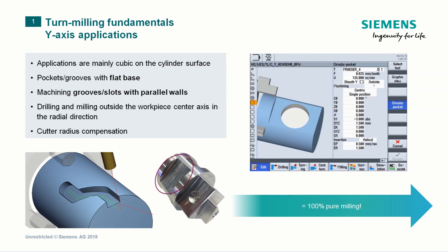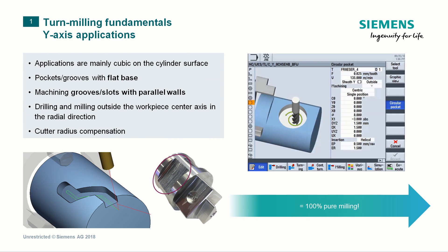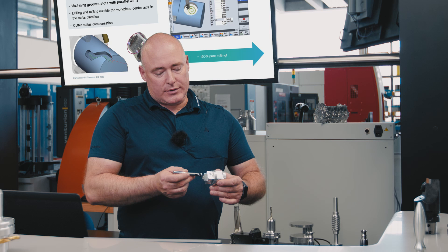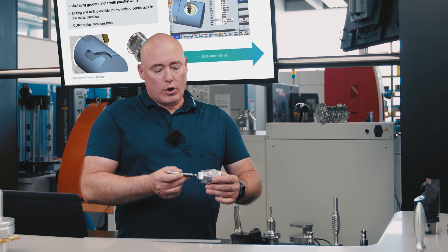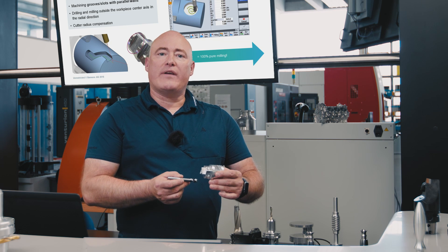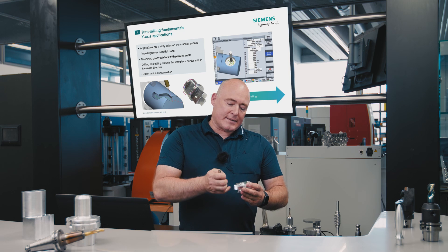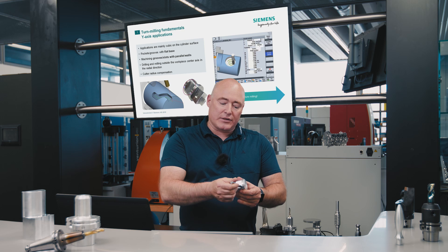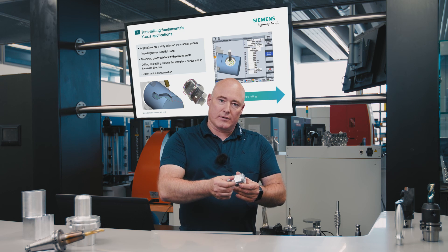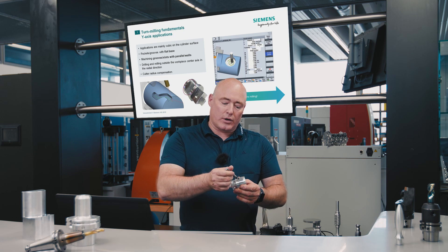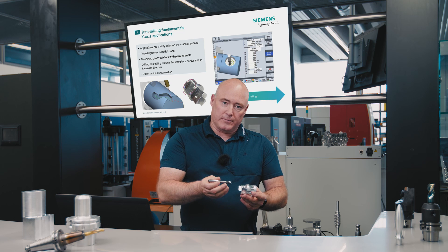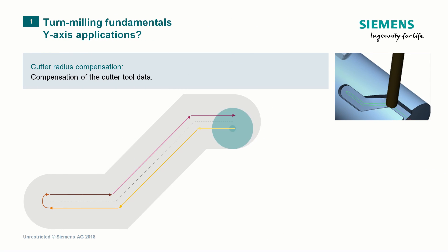These holes drilled in the front face can also be implemented using the Y axis. In contrast to the C axis, I do not need interpolation here — that's to say, compensatory movement — since the Y axis can travel beyond the center point of the workpiece axis. This allows pockets with flat bases to be created, as well as grooves. And, of course, both can be done with cutter radius compensation.